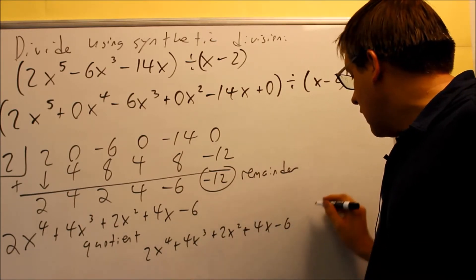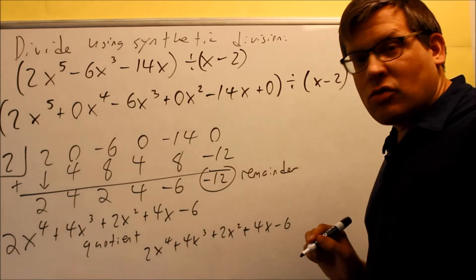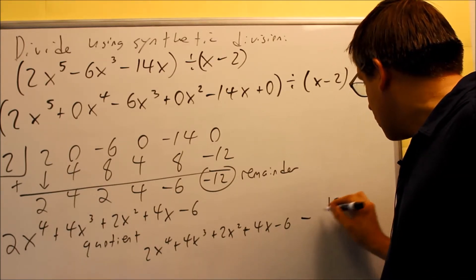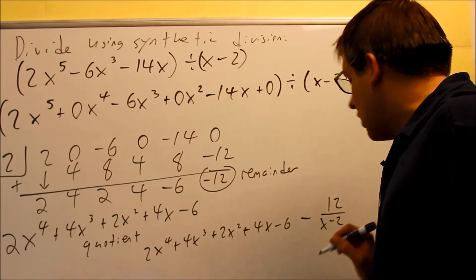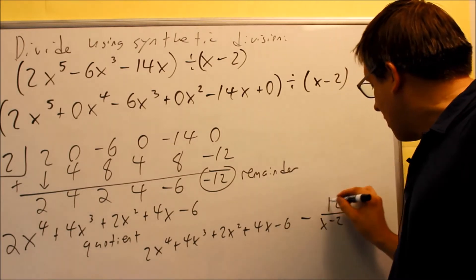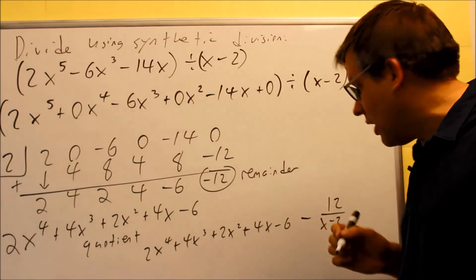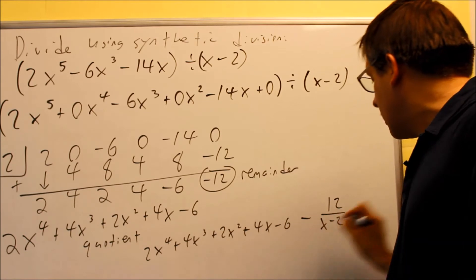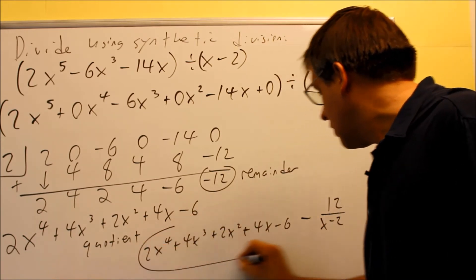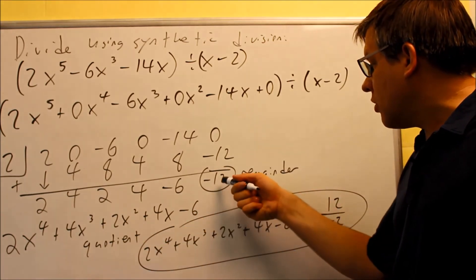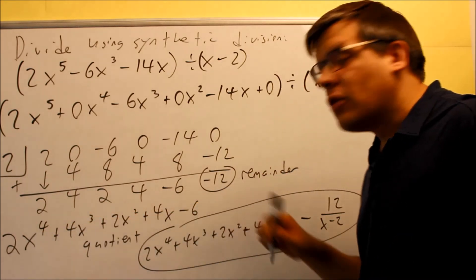And then your remainder is negative 12. What you can do is you can put a minus sign here and then put 12 over x minus 2. Or you can put a plus and then put the minus on top there. That's okay as well. But if they want the whole entire answer written out, then this is it right here. Otherwise, remainder negative 12, quotient is going to be this one.